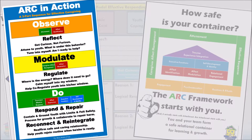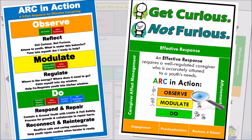We use the ARC in action sequence of observe, modulate, do — and we have it on the back of all of our badges that our staff carry around — to be able to reflect in the moment and get attuned to the youth. There are three core steps of taking ARC and making it active. Posters about getting curious not furious, a well-regulated caregiver, and effective response requires a well-regulated caregiver.